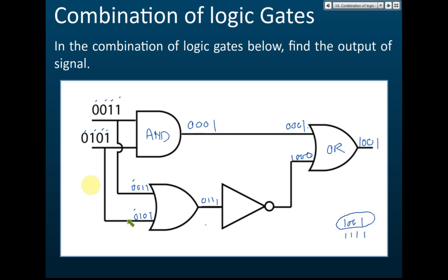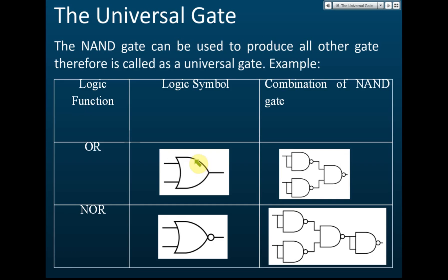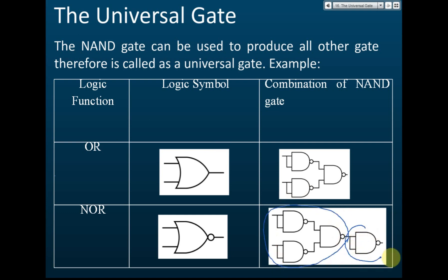If you connect NAND gates in a certain way, they behave as an OR gate. Similarly, if you take an OR gate and put a NOT gate in front of it, it becomes a NOR gate — that is, a NOT-OR gate. Make sure you remember this relationship between gate combinations.